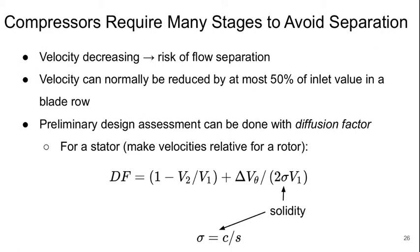We can do some preliminary design assessment with the use of another empirical factor called the diffusion factor. For a stator, and you could do the same thing for a rotor except all the velocities would become relative velocities, the diffusion factor is 1 minus V2 over V1 plus delta V theta over 2 sigma V1, where sigma is something called the solidity C over S.